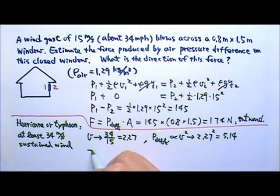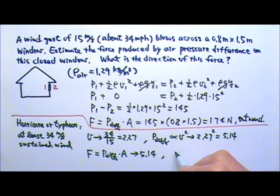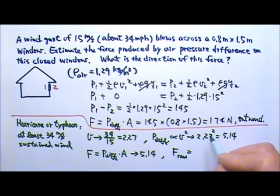The force created by the pressure difference is the pressure difference times the area. The area is not going to change, so it is proportional to the pressure difference. Therefore, the force will change by the same factor, 5.14. The new force caused by a wind speed of 34 meters per second would be 174 newtons times 5.14, which is 894 newtons.